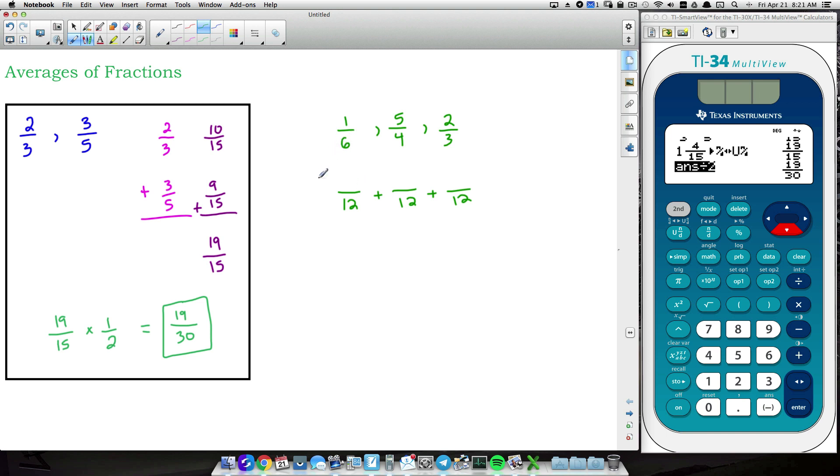And let's just change each numerator. So this first fraction, 6 times 2 gives you 12. So multiply the numerator by 2. 1 times 2 gives you 2. 4 times 3 gives you 12. So multiplying 5 by 3, we get 15. And then 3 times 4 is 12. So 2 times 4 gives us 8. Here are our equivalent fractions to these up here. But now we can add those together.